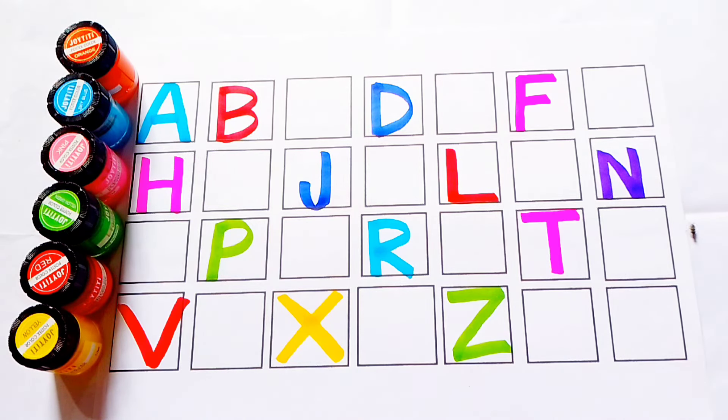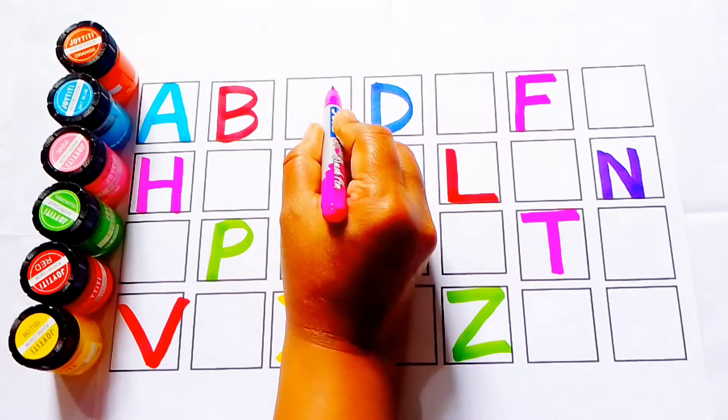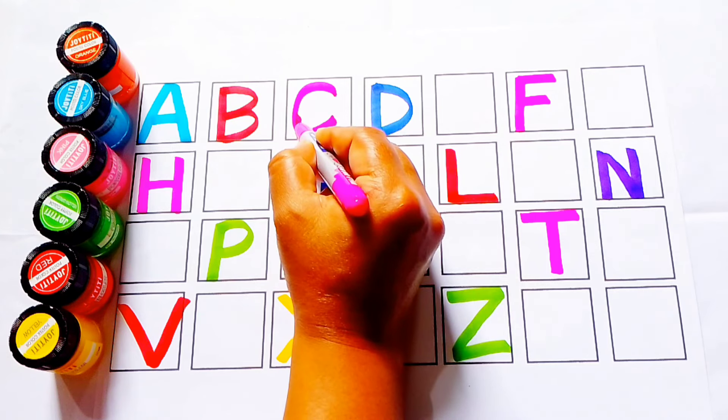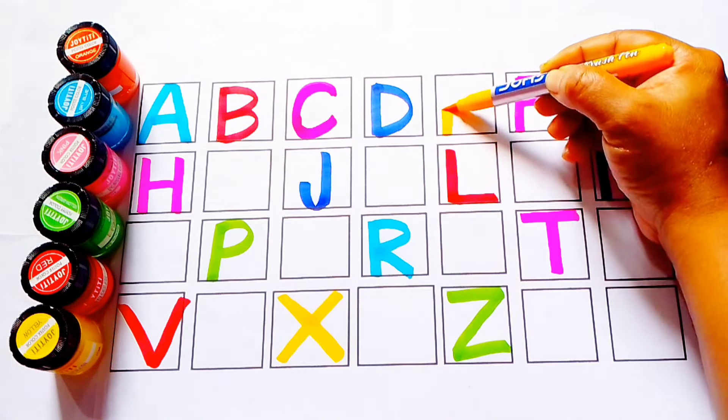B for ball. Next, we write pink color. C. C for cat. C for cow. D for dog.